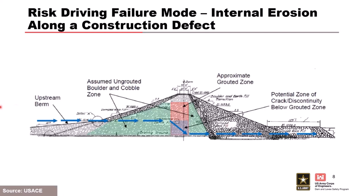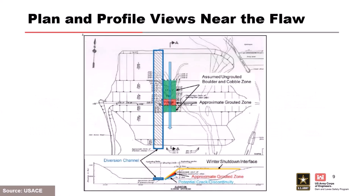This plan view shows the profile across the valley — upstream to downstream. The green area is the ungrouted rock fill, and the pink area in the center is where they grouted. In profile, the yellow line on top is the winter shutdown line — you can see the slope where they didn't quite top off the embankment. Here is the approximate ungrouted zone and the low-density zone below that riprap interface.